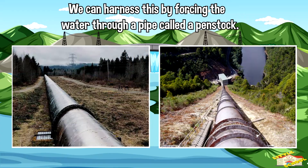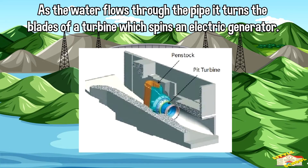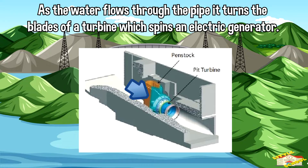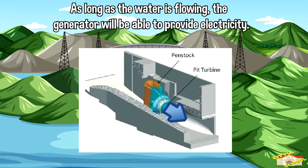We can harness this by forcing the water through a pipe called a penstock. As the water flows through the pipe, it turns the blades of a turbine, which spins an electric generator. As long as the water is flowing, the generator will be able to provide electricity.